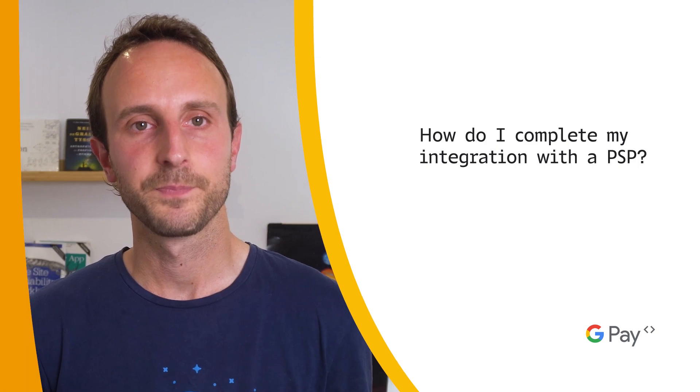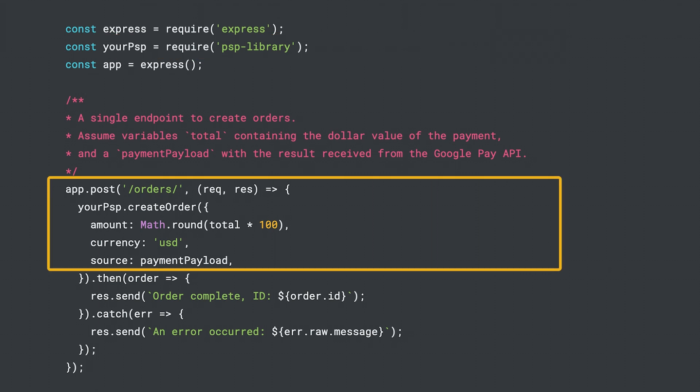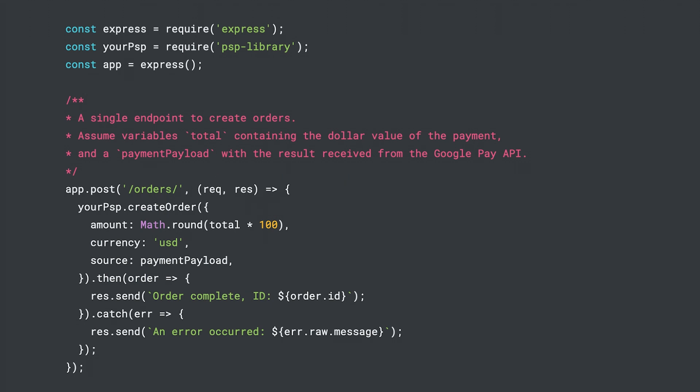How do I complete my integration with the PSP? The way to handle the payment payload received from Google Pay will depend on how you are completing the operation with your payment processor. The most common procedure is to use this payment method to create the order through your backend servers and from there initiate the payment transaction with your PSP. Some PSPs offer alternative flows — one of them separates the creation of the payment method and the order, allowing you to use the Google Pay result to create the payment method directly from your client, using client libraries provided by your PSP. Once the payment method is created, you can initiate the payment transaction from your backend servers without attaching the payment method information, simply passing a reference to the object created previously.